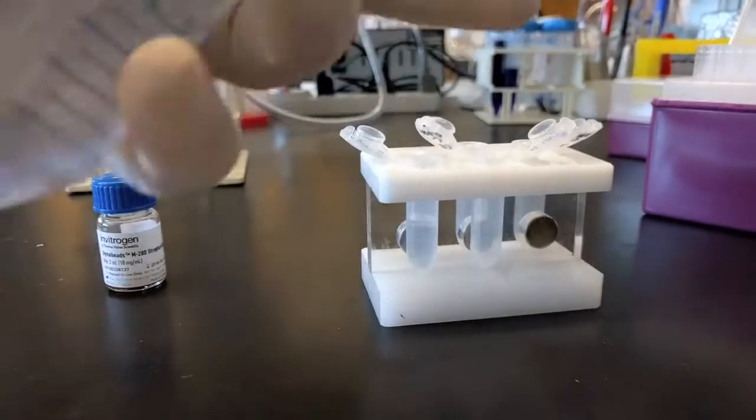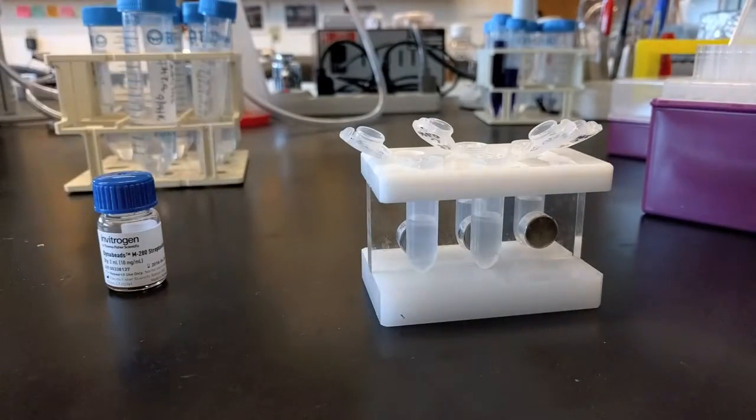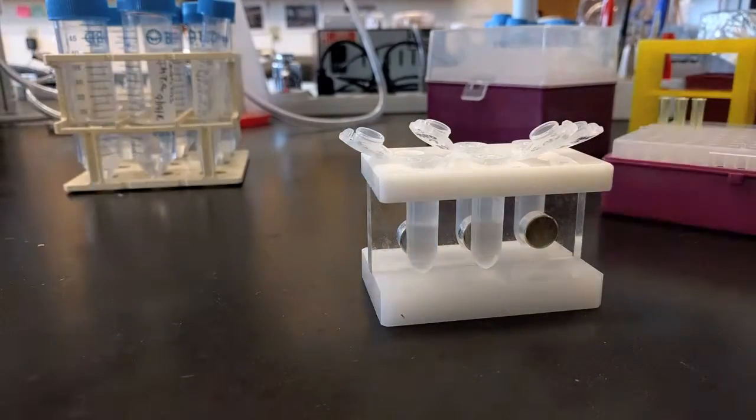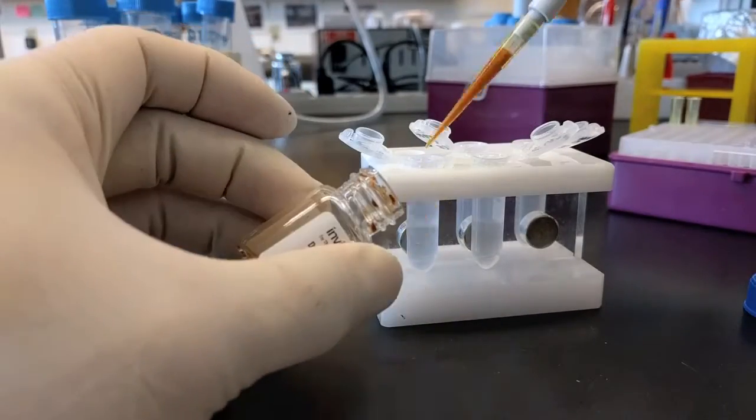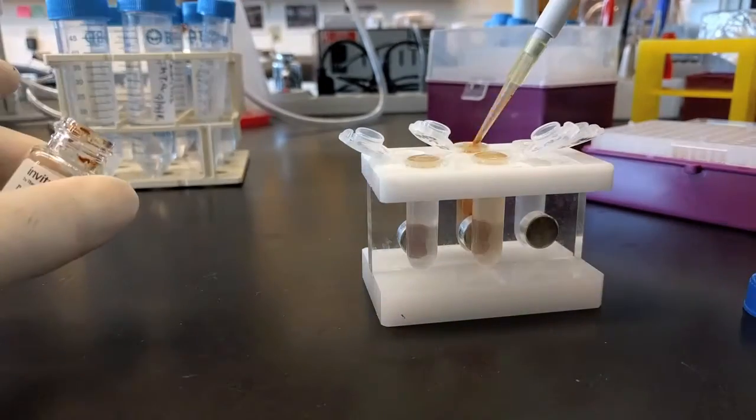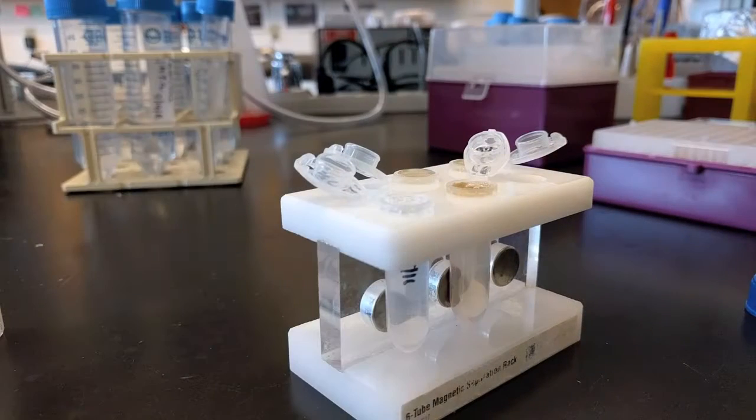Here I'm preparing the magnetic particles and washing them. You'll see that the magnetic particles will be attracted to the magnet, which is that circular silver object right behind the tubes. You can see the magnetic particles slowly get attracted to the side.